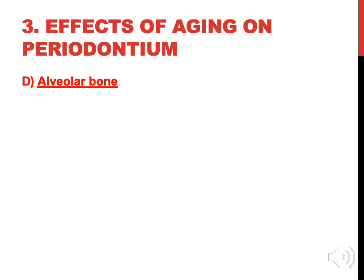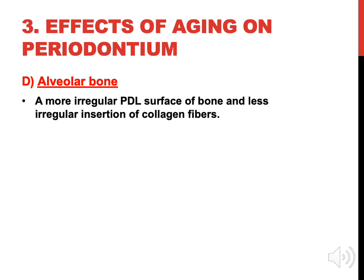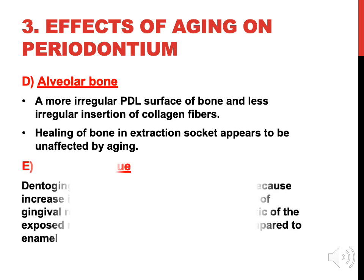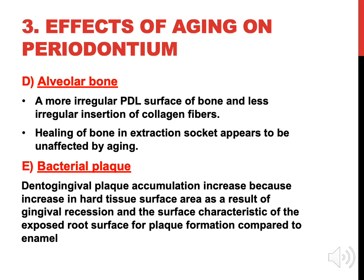Effect on alveolar bone: there is a more irregular periodontal ligament surface of bone and less regular insertion of collagen fibers. Healing of bone in extraction sockets appears to be unaffected by aging. Dental gingival plaque accumulation increases due to increased hard tissue surface area as a result of gingival recession, and the surface characteristics of the exposed root surface favor plaque formation compared to enamel.